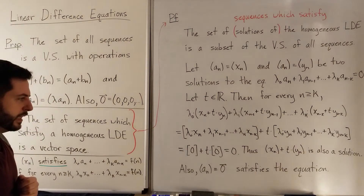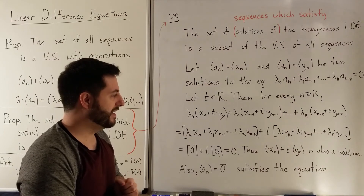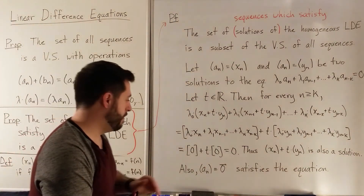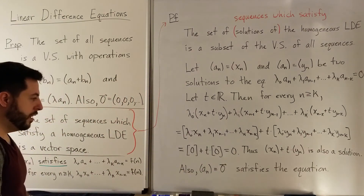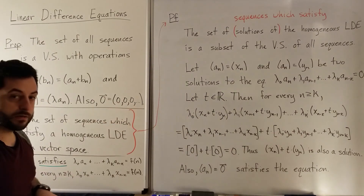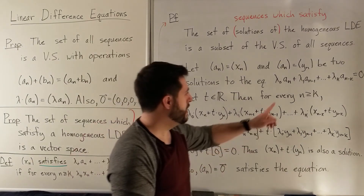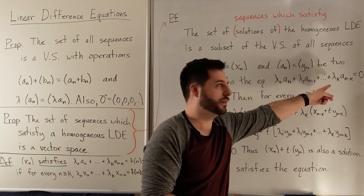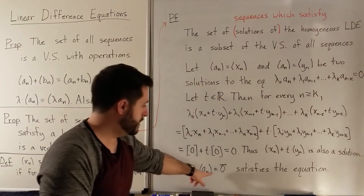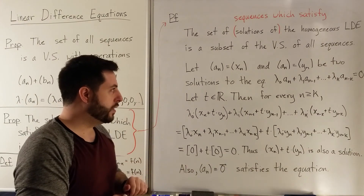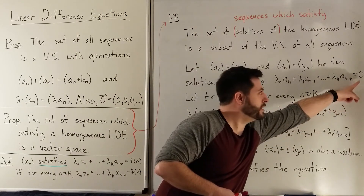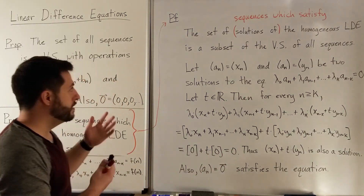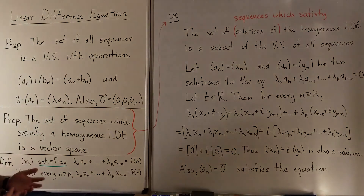That checks the first two subspace conditions. But the third thing must be checked no matter what: we need to make sure that zero is a solution. The zero vector is just the sequence of all zeros. If we plug it in, we're replacing each a_sub_whatever with zero, so we just have zero plus zero plus zero, which of course is always equal to zero. Notice that in order for that to work, we had to have a homogeneous linear difference equation. If there was something that was not zero on the right-hand side, zero would not satisfy it, and therefore we would not get a vector space. So we know that the set of solutions to a homogeneous linear difference equation must be a vector space.